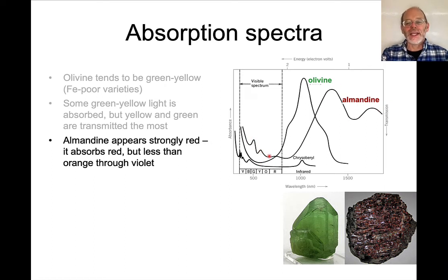this spectrum actually absorbs substantially in the red part of the spectrum, but much less than in the yellow, green, blue, and violet part of the spectrum over here. So what we see transmitted is dominated by the red part of the spectrum. And that's why garnets are typically red.